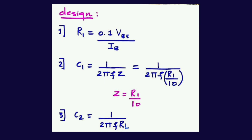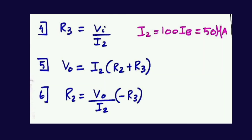Now to find C2, the formula will be 1 by 2 pi F into RL. Next, number 4, to find R3 — R3 will be acting as your input resistor at the inverting terminal. Therefore, the formula will be R3 is equal to VI by I2. I2 from the specifications is 100 times of IB, which equals 50 microamperes. To find the output voltage, the formula will be V0 is equal to I2 into R2 plus R3. Finally, to find R2, the formula will be R2 equal to V0 by I2 minus I3, derived from the above formula.